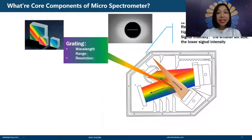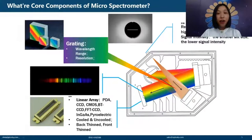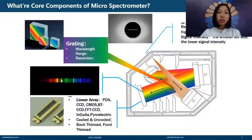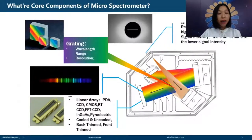Next is the grating — a very important component. It decides the wavelength range and the resolution. Then there is the detector, which transforms optical signals to electrical signals. It forms a spot beam stripe on a linear array, from which we can export the spectrum as electrical signals.